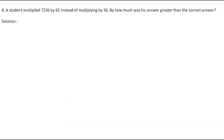Now let's go to the next question. This is the eighth question: a student multiplied 7,236 by 65 instead of multiplying by 56. By how much was his answer greater than the correct answer? That student multiplied 7,236 by 65 instead of 56. So what we will do is perform both multiplications.